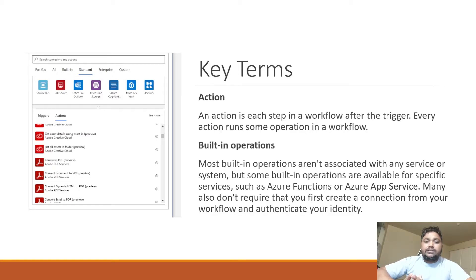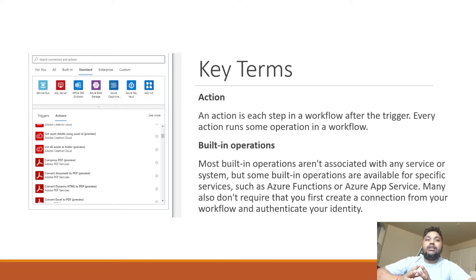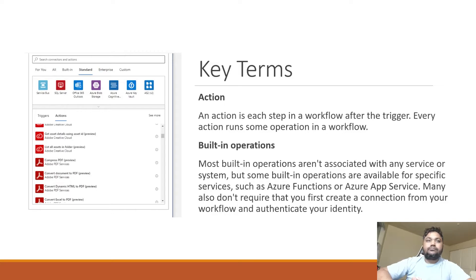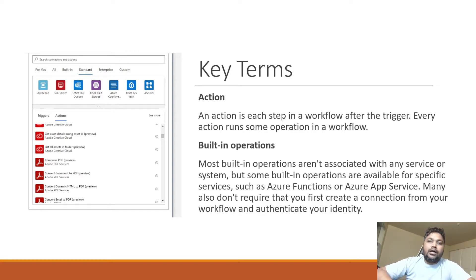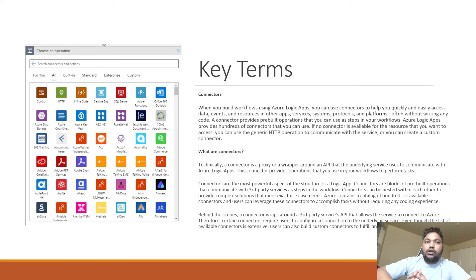An action is what we perform after a trigger has fired. For example, if somebody uploaded a PDF, you might want to compress or convert it, or convert HTML to PDF. Built-in operations are generic and not tied to any specific service. But some actions, like PDF operations, are provided by Adobe — tied to a specific service. Similarly, Azure Functions and Azure App Services have specific operations available for their respective services.